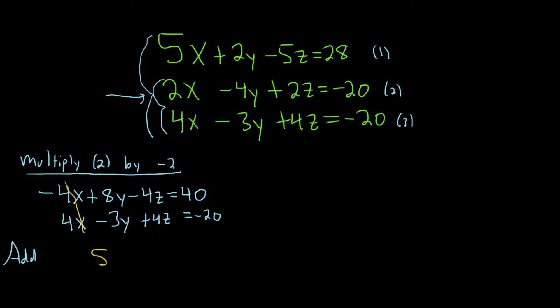You get 5y. These cancel, and this is equal to 20. Very nice. Now we can divide by 5. So y is equal to 4. I'm going to put this in a box because this is very useful.